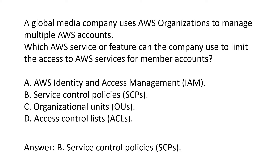Wrong answers. A. AWS Identity and Access Management (IAM) is used to manage user access to AWS services and resources, but it does not provide the ability to limit access across multiple accounts. C. Organizational Units (OUs) are used to organize accounts within an organization, but they do not provide the ability to limit access to AWS services. D. Access Control Lists (ACLs) are used to control access to resources, but they do not provide the ability to limit access to AWS services across multiple accounts.